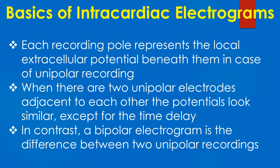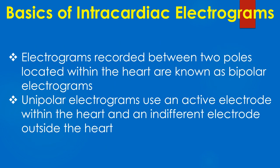Each recording pole represents the local extracellular potential beneath it in the case of unipolar recording. When there are two unipolar electrodes adjacent to each other, the potentials look similar except for the time delay. In contrast, a bipolar electrogram is the difference between two unipolar recordings. Electrograms recorded between two poles located within the heart are known as bipolar electrograms.